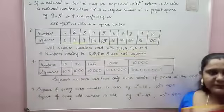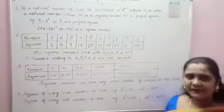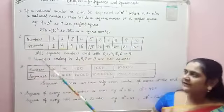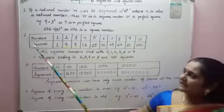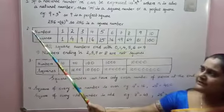Now, coming to the second point, the properties of square numbers. You can see here, there is a table I have drawn and it has two rows: numbers and their squares.